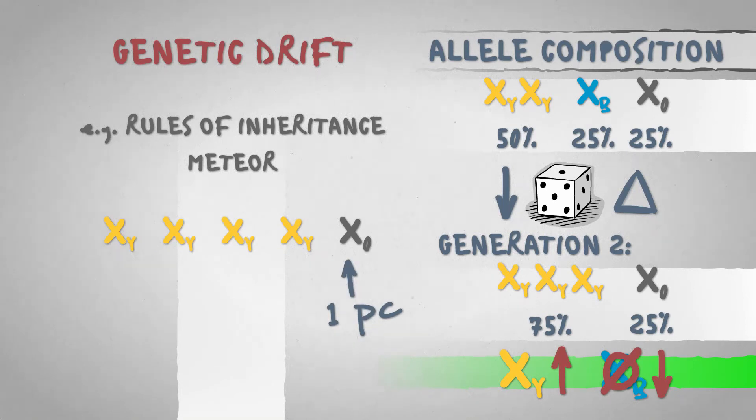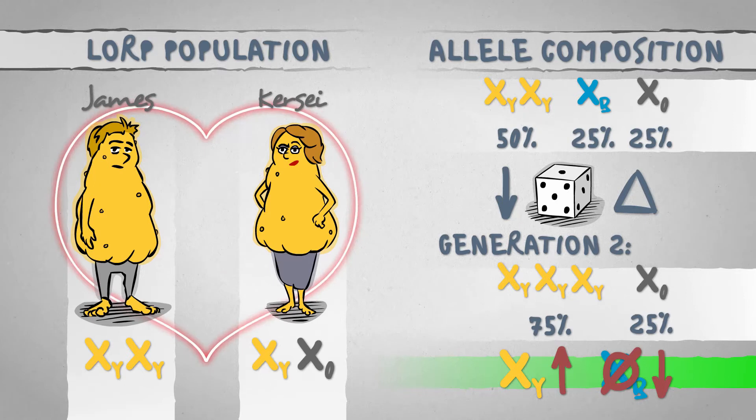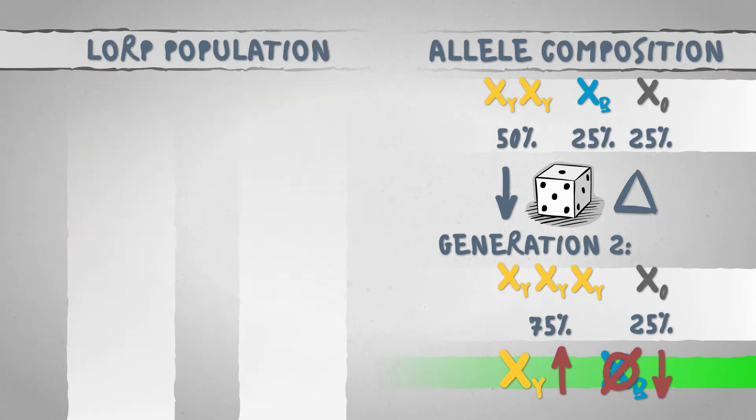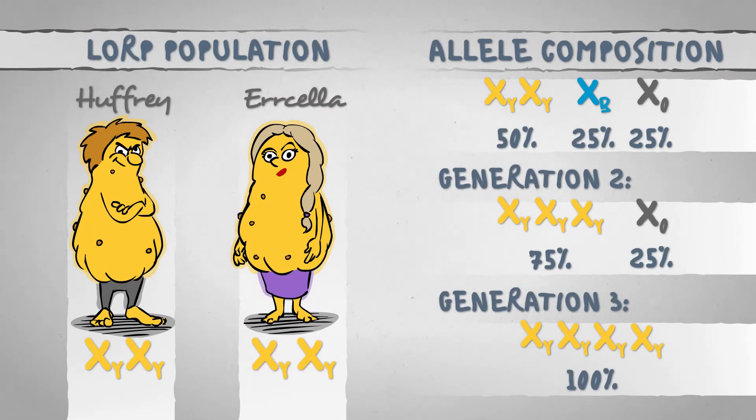Alleles that are only present in small numbers can be permanently lost due to genetic drift. If the offspring of Larry and Gina, say James and Kersey, breed with each other - I know it's incest, but it's just the two of them, give them a break - so in the third generation, X0 can easily drop out as well.